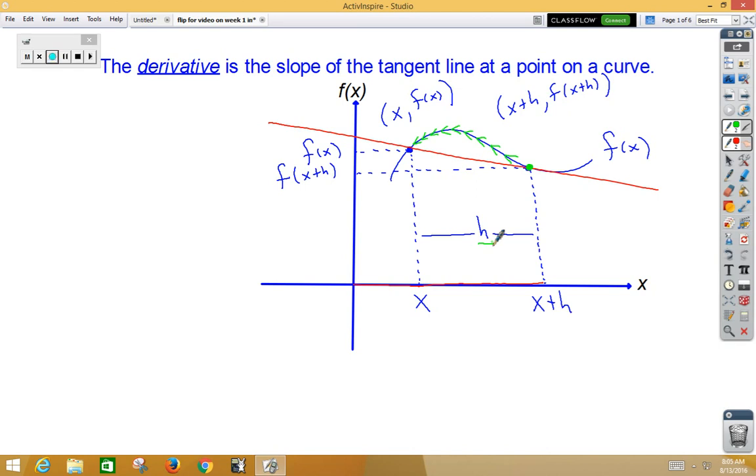As we move it towards that first point, this h value gets smaller and smaller. If we take the original two points and do the slope of the secant using the slope formula we learned in algebra one, we would get y₂ minus y₁ over x₂ minus x₁. This simplifies as f(x + h) minus f(x) over h and that's called the difference quotient.